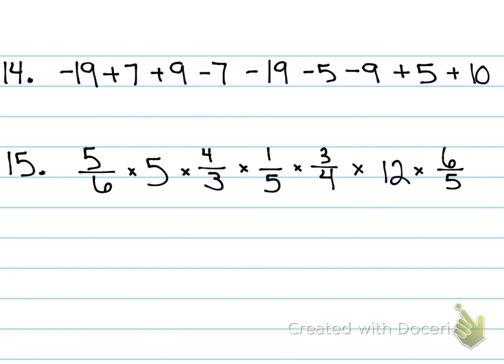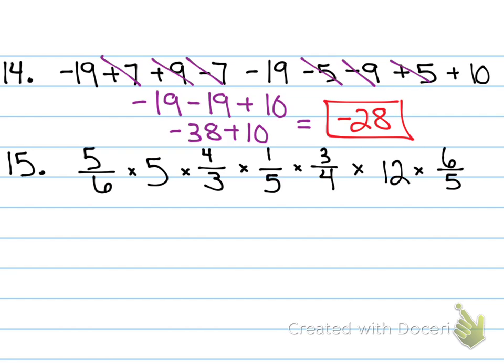So, start naming me some opposites. 7, negative 7. 9, negative 9. 5, negative 5. 19s? No. 19s are not opposite. They're both negative. Negative 38 plus 10 is negative 28. Who got it right? Good.